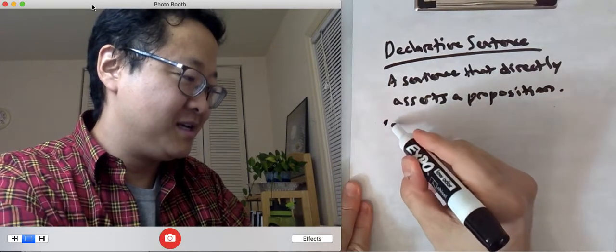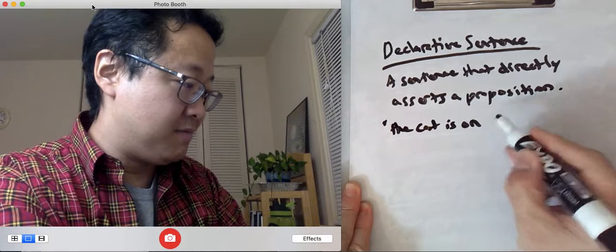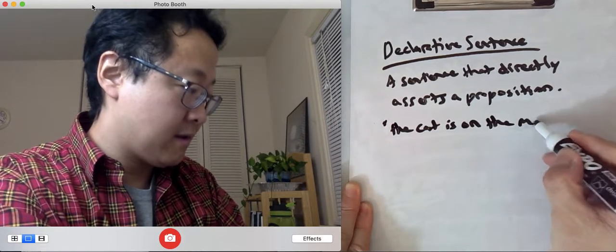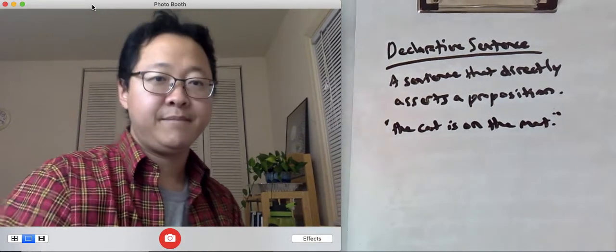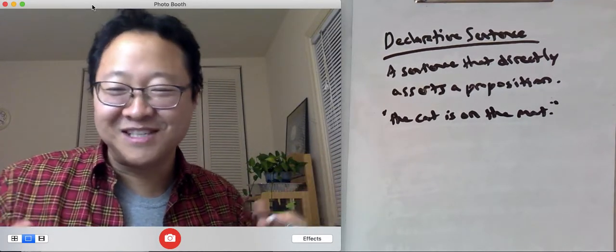So a sentence like 'the cat is on the mat'—that's about as straightforward as it gets.